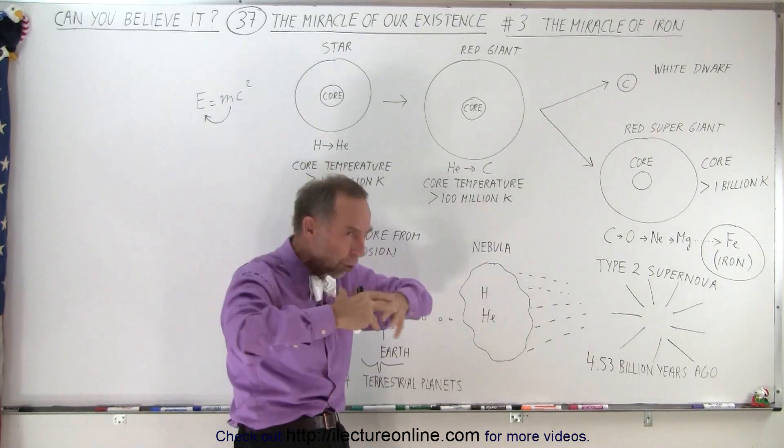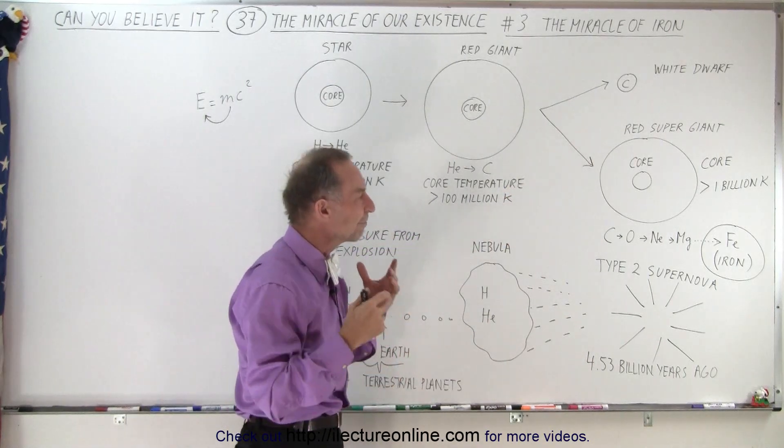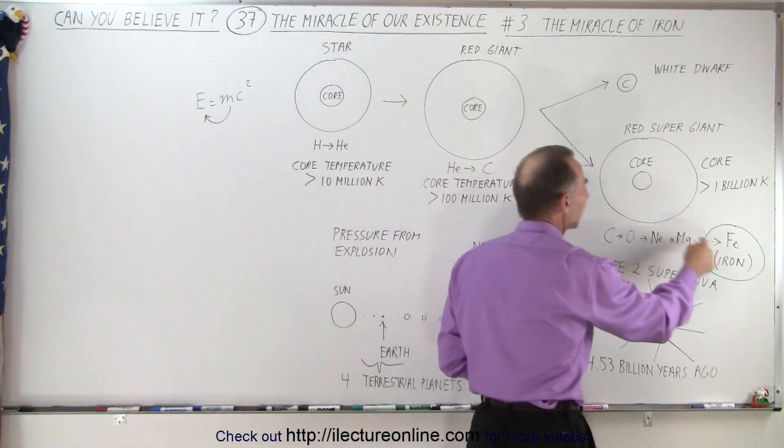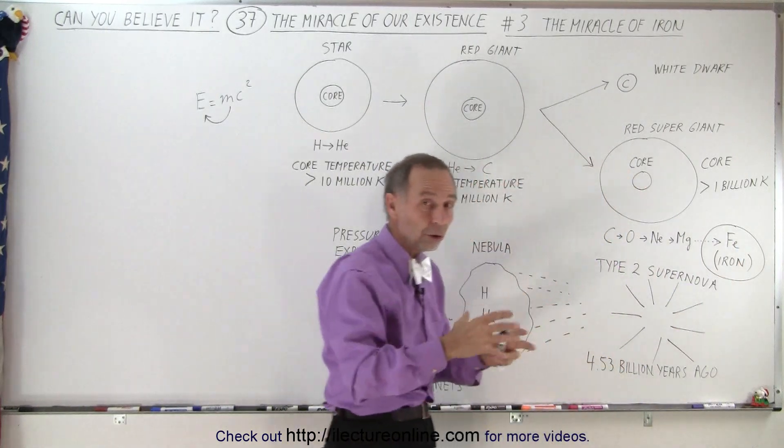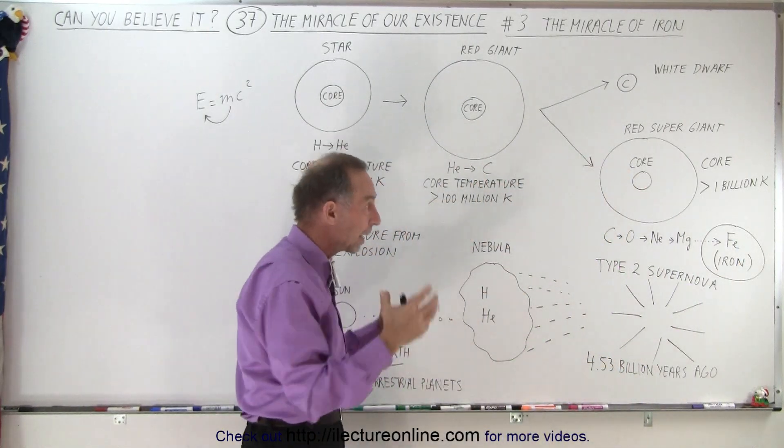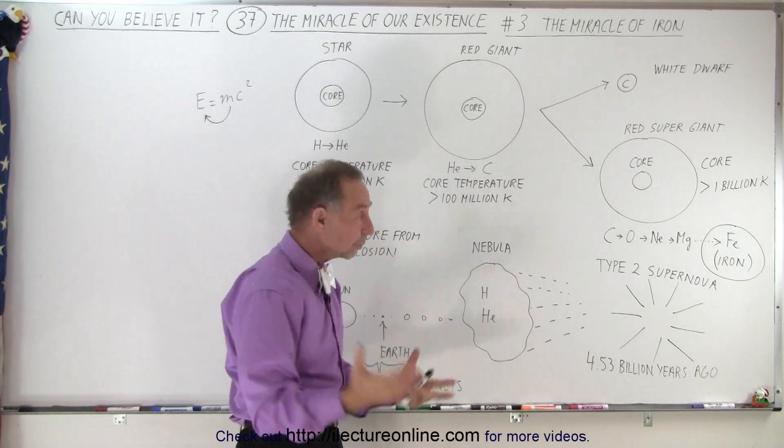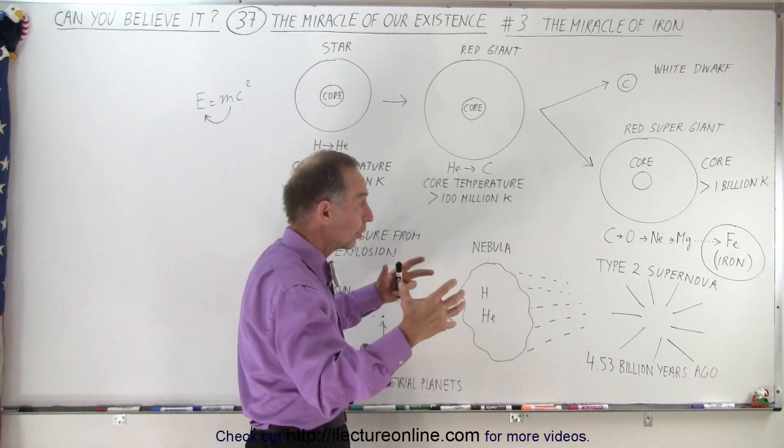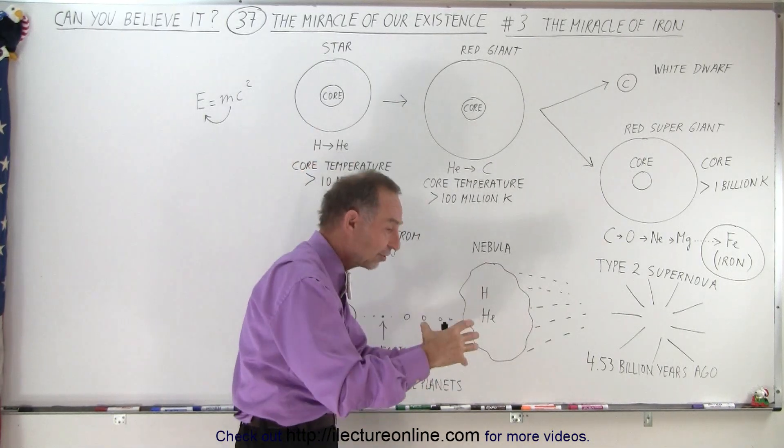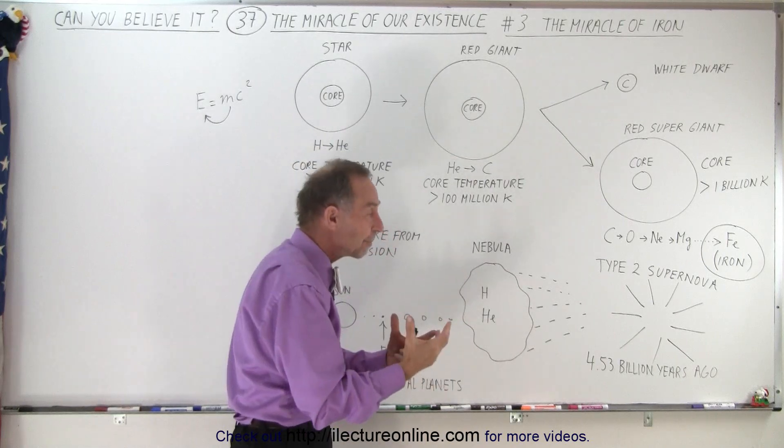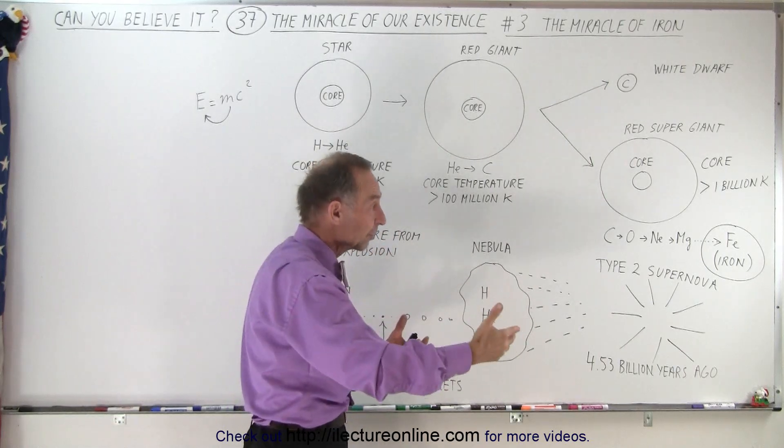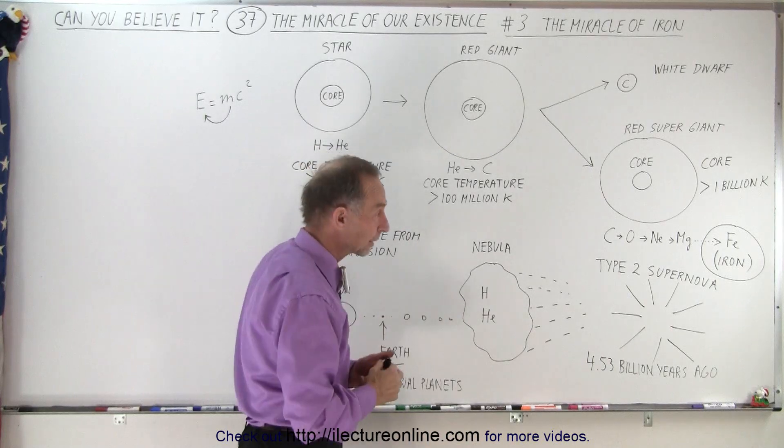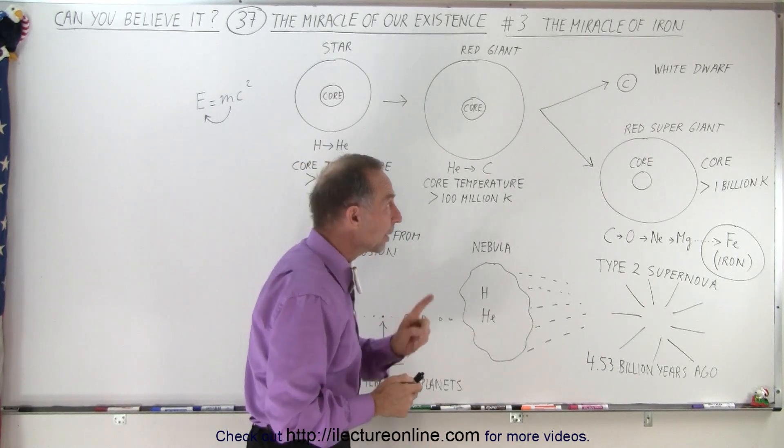So this process continues, the star continues to put out copious amount of energy, but then finally the core will begin to form iron and then slowly the whole core will fill with iron. And when the whole core is filled with iron, then the core stops that process, starts collapsing, generates even higher temperatures in order to try to fuse the next elements like cobalt and nickel on the periodic table.